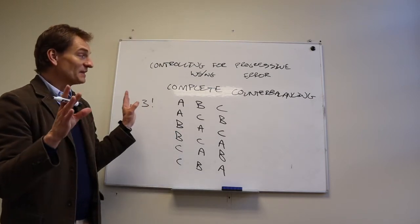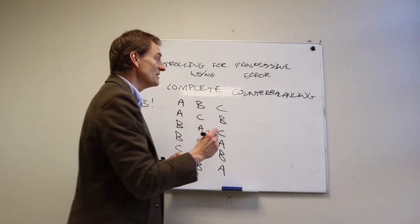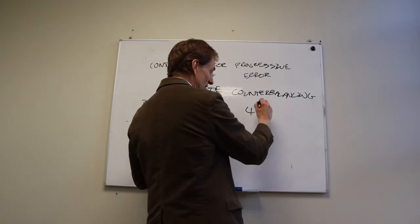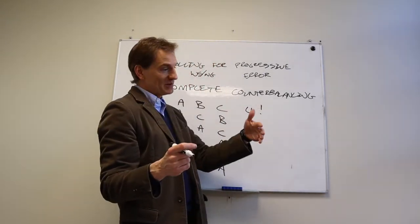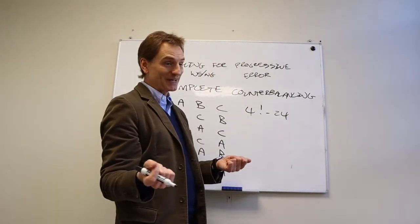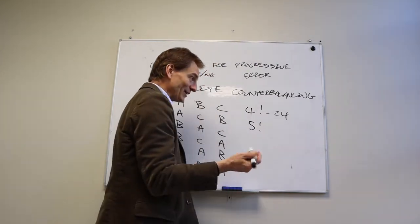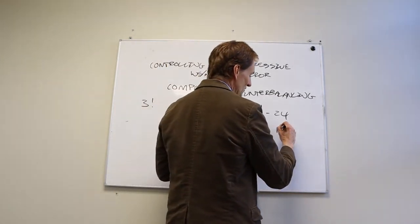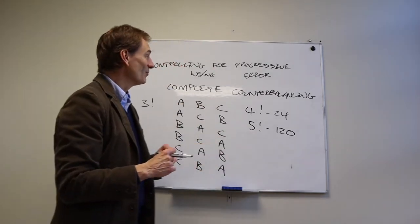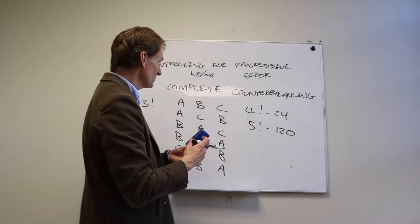Complete counterbalancing works if you have two or three treatment conditions. If you have four treatment conditions, how many different treatment orders do we have? Four times three times two times one is equal to 24. That's a lot. That's unwieldy. And five factorial, that's 120. No one runs 120 different treatment orders to try to eliminate progressive error. So we have to do something else.